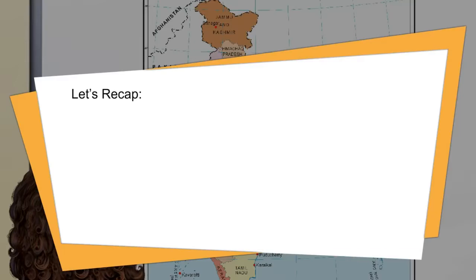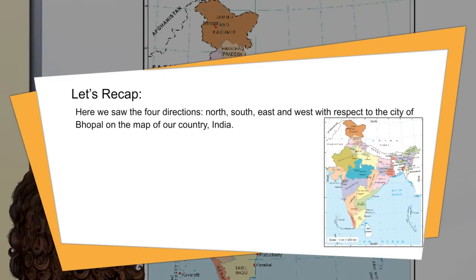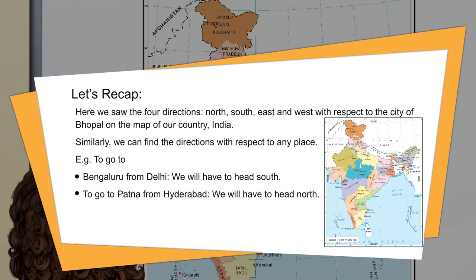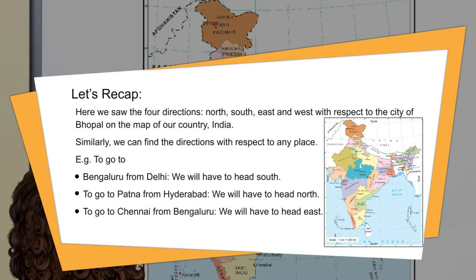Let's recap. Here we saw the four directions — north, south, east, and west — with respect to the city of Bhopal on the map of India. Similarly, we can find directions with respect to any place. To go to Bangaluru from Delhi, we'll have to head south. To go to Patna from Hyderabad, we'll have to head north. To go to Chennai from Bangaluru, we'll have to head east.